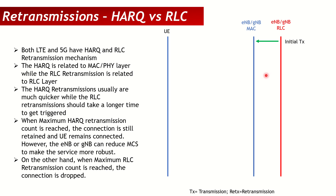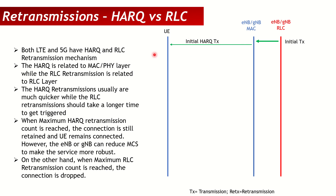Let's say we have a packet to transmit from the eNodeB or gNodeB towards the UE. The RLC layer inside the eNodeB or gNodeB will get the packet from the PDCP layer and send it to the lower layers — MAC or the physical layer. The MAC or physical layer will then send that packet over the air. That is the initial HARQ transmission. If the UE is able to decode it, it will send an acknowledgement, and that's the end of this packet.